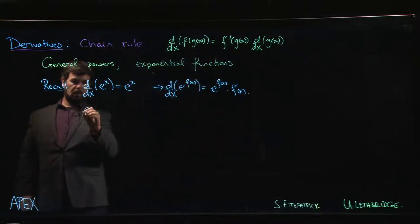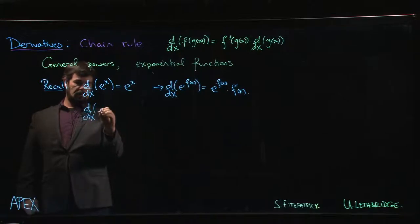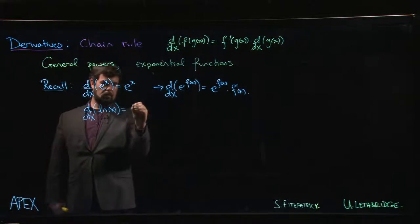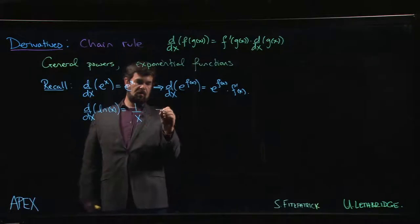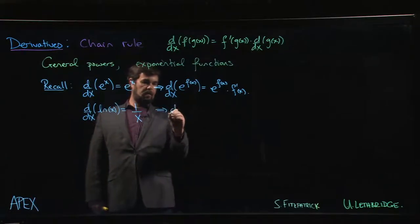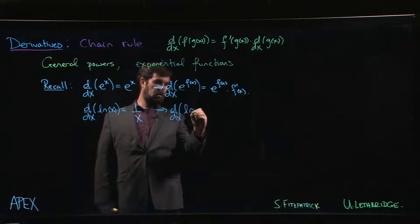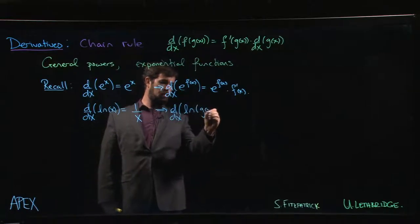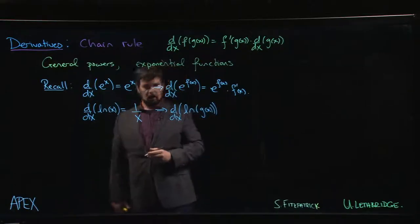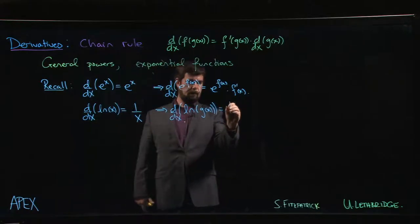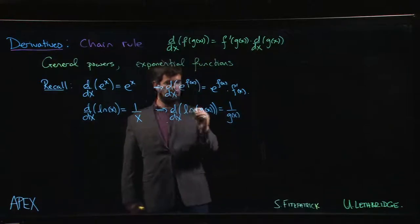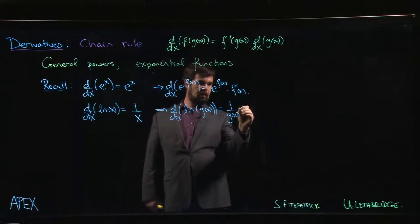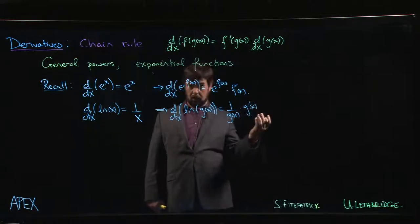Similarly, we know that if you take the derivative of the natural log, you get 1 over x. And so if you were taking the natural log of some other differentiable function, well then you should get 1 over that function. That's the derivative of the outside multiplied by the derivative of the inside. So you get g prime over g.